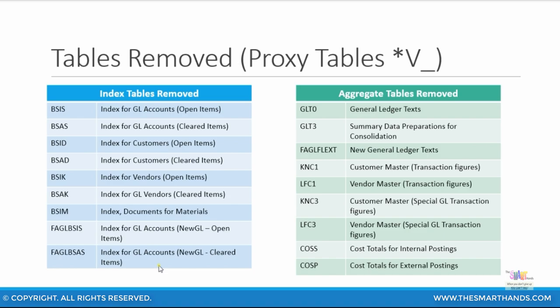For planning, you can use the table ACDOCP, and for certain totals items, there is also another table called ACDOCT. That will replace most of the totals tables — also called aggregate tables — which have also been removed, such as COSS, COSP, and so on.